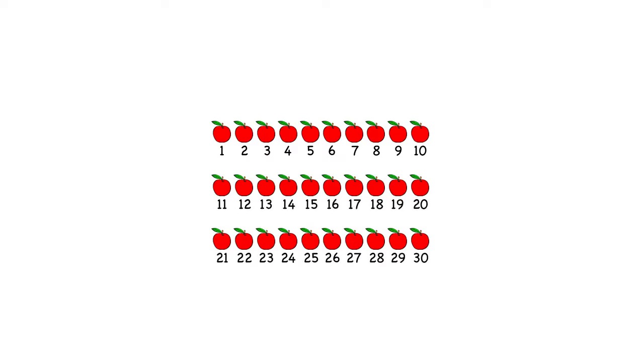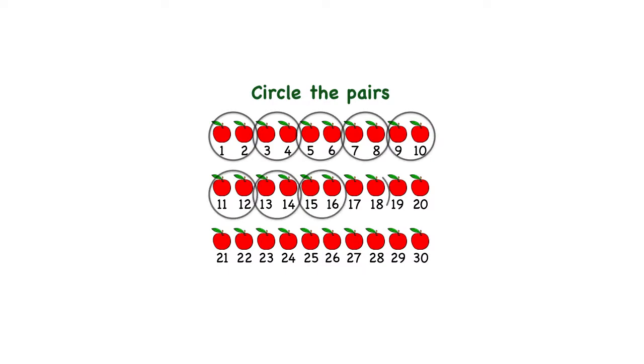Now, if you could draw circles around pairs of these apples, how would the circles look? Well, here's one way to circle the pairs. I'll just draw circles around two apples, and that'll keep going, circling more pairs.